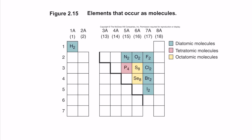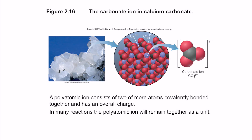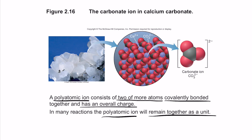Most common elements that occur as molecules are non-metals: hydrogen, nitrogen, oxygen, fluorine, chlorine, bromine, iodine, selenium, and sulfur. Sulfur and selenium are octatomic molecules (8 atoms combined), and phosphorus is a tetraatomic molecule (4 atoms combined). Polyatomic ions consist of two or more atoms that are covalently bonded but have an overall charge. An example is the carbonate ion CO₃²⁻ in calcium carbonate.